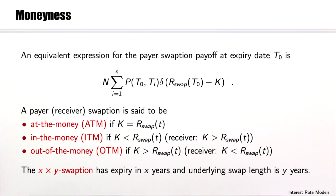Recall that an equivalent expression for the value of the payer swap is given in terms of the swap rate, which is shown here without the plus sign. Hence an equivalent expression for the payer swaption payoff at expiry date T0 is what is shown here with the plus sign.